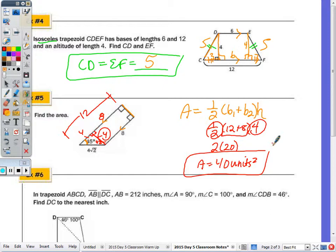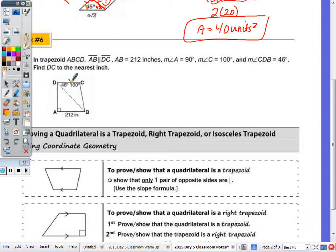Alright, number 6, we're given that it's just a trapezoid with sides AB parallel to DC. So parallel lines AB and DC. The length AB is 212 inches, the measure of angle C is 100, the measure of CDB is 46. Find the length DC to the nearest inch. So finding the length of this base. Well given the two parallel segments, we have a transversal, that diagonal is a transversal. So if this is 46, what's this angle here? 46. What type of trapezoid do we have? Even though it didn't state it in the directions. A right trapezoid.